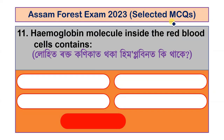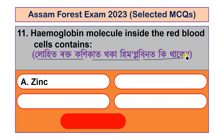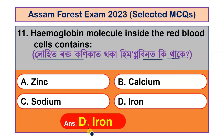Question number 11: What does the hemoglobin molecule inside the red blood cell contain? Options are zinc, calcium, sodium and iron. The correct answer is iron — hemoglobin molecules in red blood cells contain iron.